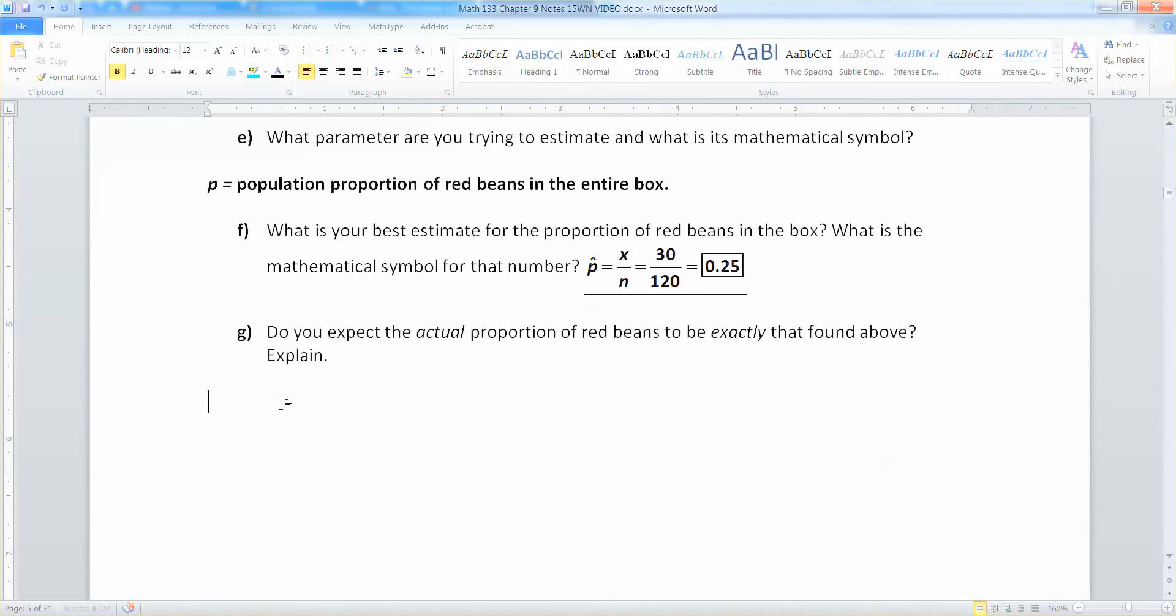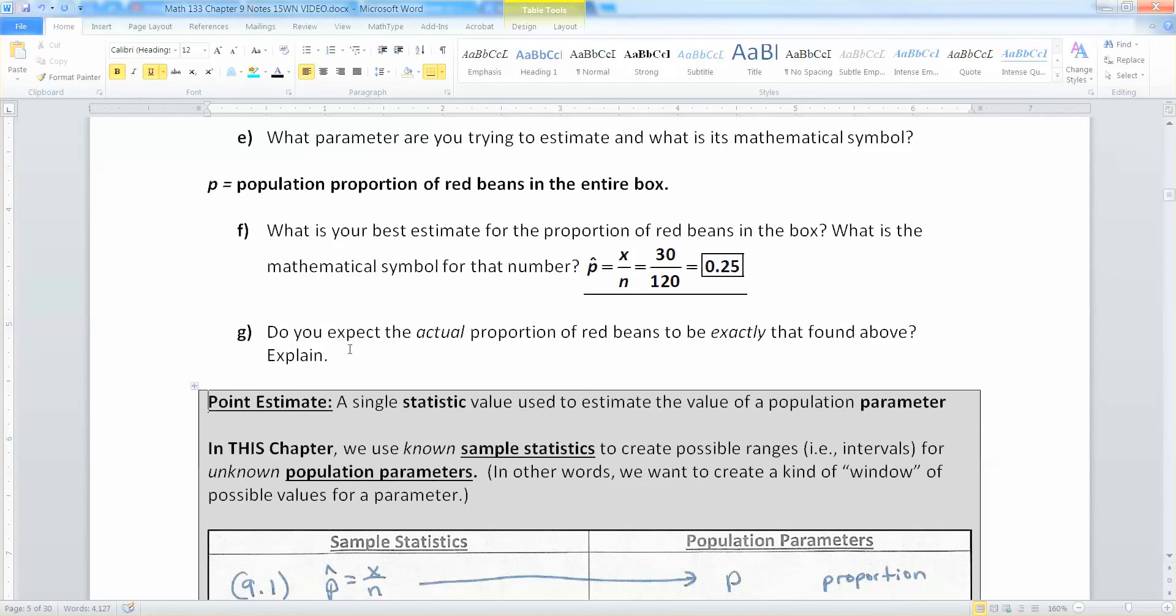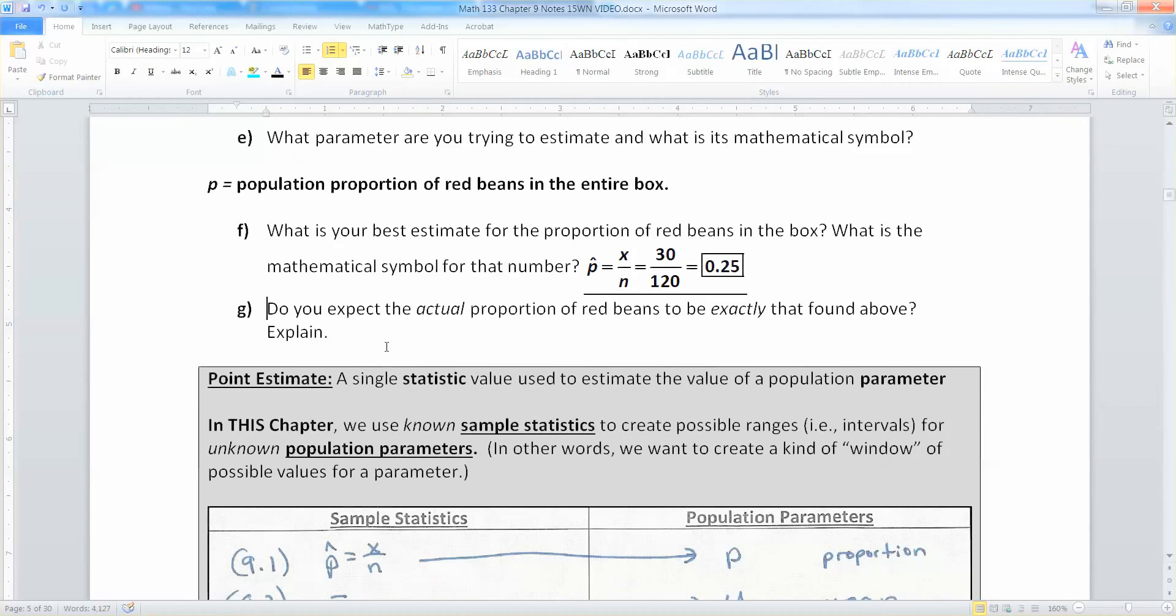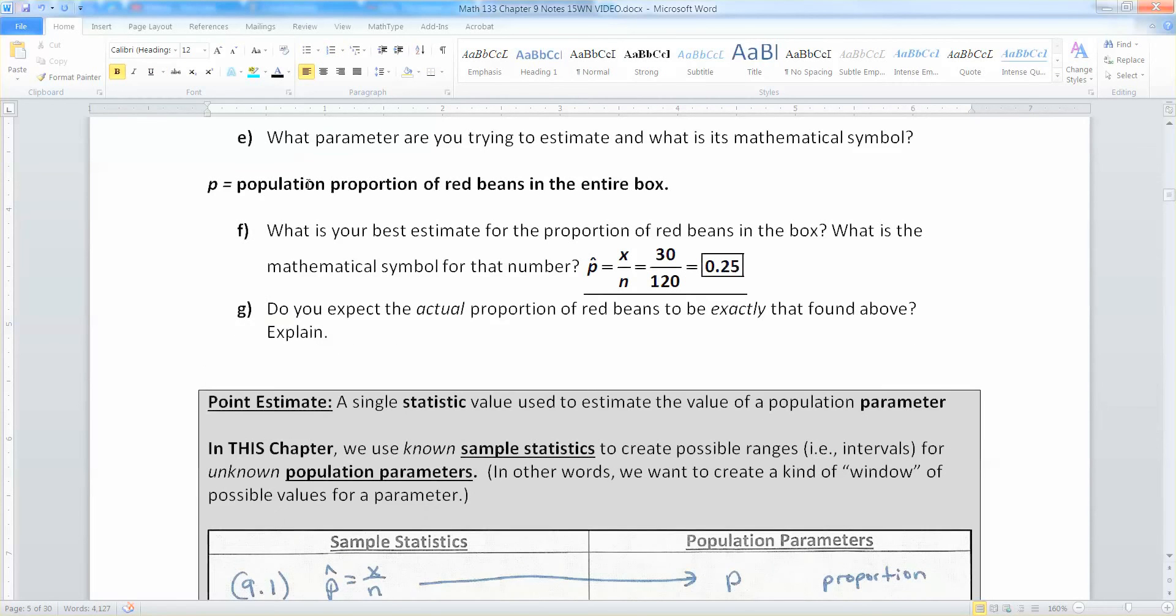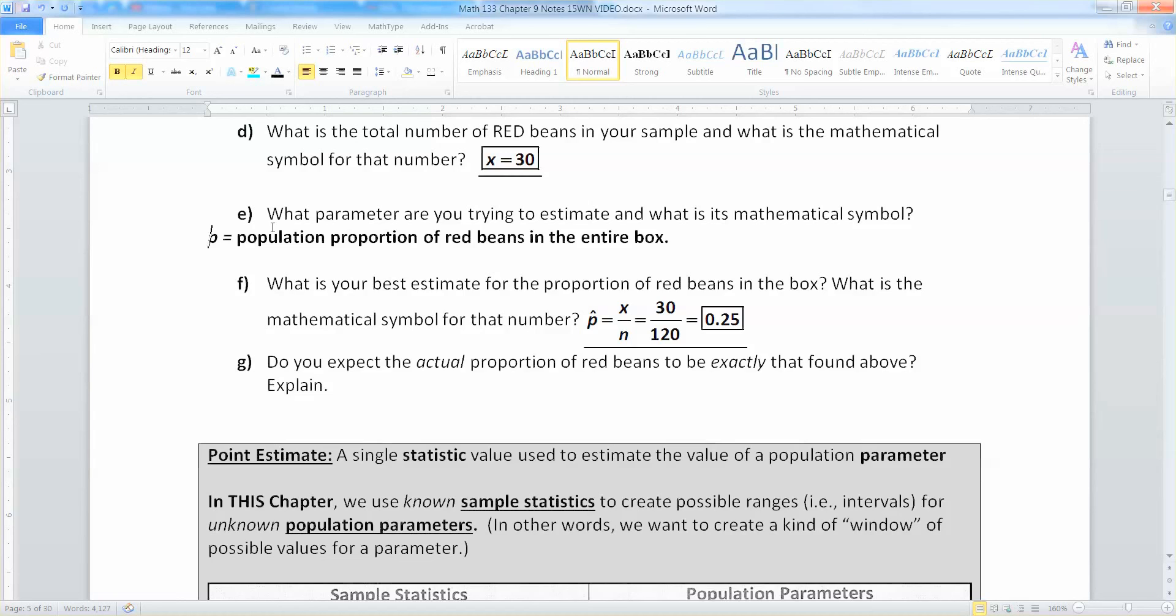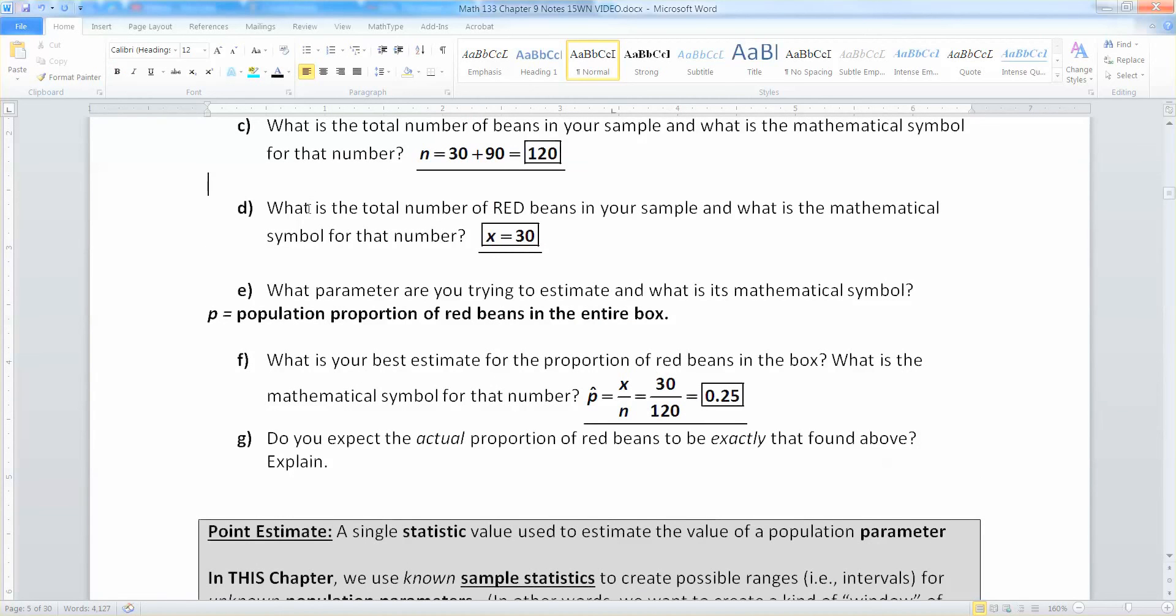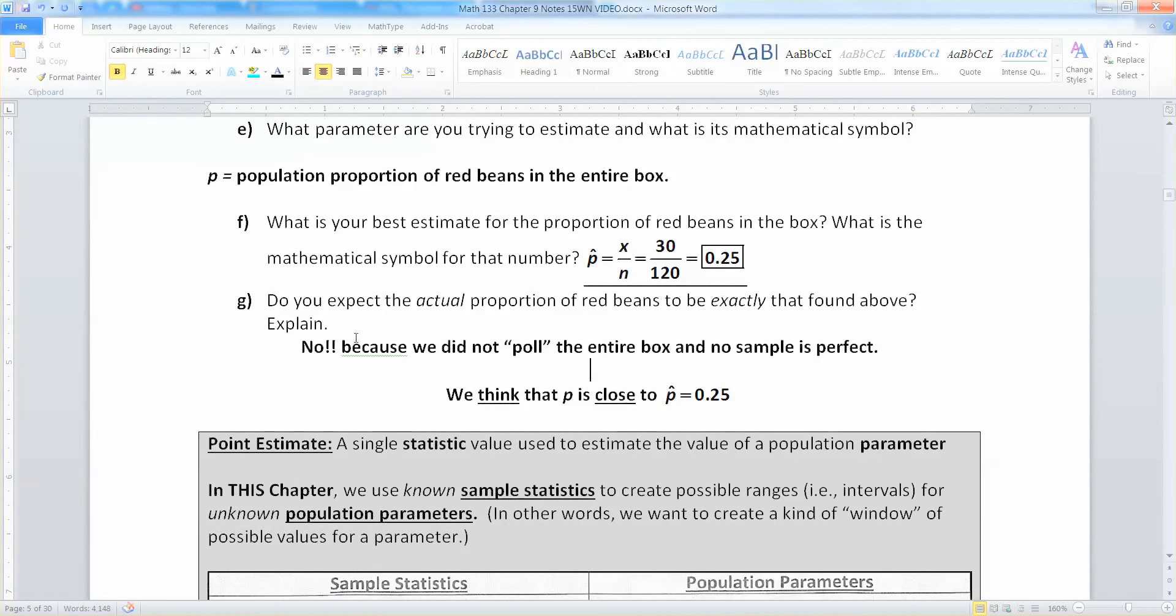Now do we know the actual value of the population of red beans? No we do not. Because that would require us to pull, if you will, the entire box, and we didn't do that. So no, we don't know the actual proportion because we did not sample the entire box. And no sample is perfect, because of sampling error. Section 1.5, sampling error. All samples are going to be a little bit off.